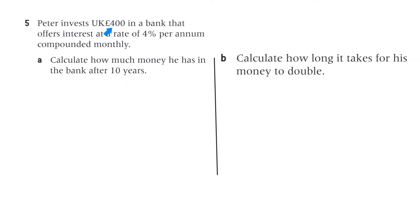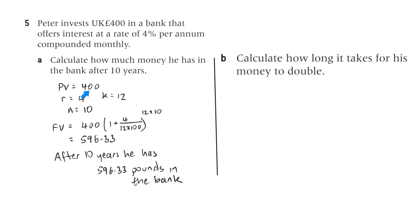Question 5. Peter invests £400 in a bank that offers interest at a rate of 4% per annum compounded monthly. Calculate how much money he has in the bank after 10 years. Present value is £400, R is 4, K is 12 because it's monthly, N is 10. After 10 years, he has £596.33 in the bank.